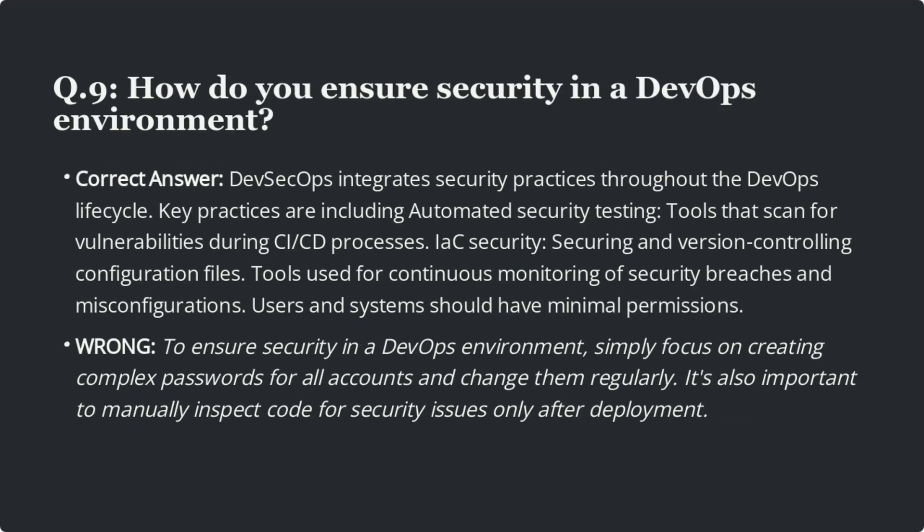Question 9: How do you ensure security in a DevOps environment? DevSecOps integrates security practices throughout the DevOps lifecycle. Key practices include automated security testing tools that scan for vulnerabilities during CI/CD processes, IaC security by securing and version controlling configuration files, continuous monitoring tools for security breaches and misconfigurations, and ensuring users and systems have minimal permissions. Wrong answer: Simply focus on creating complex passwords and manually inspecting code for security issues only after deployment — this is incorrect.